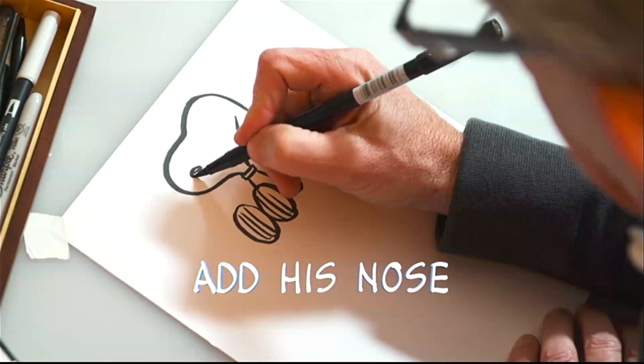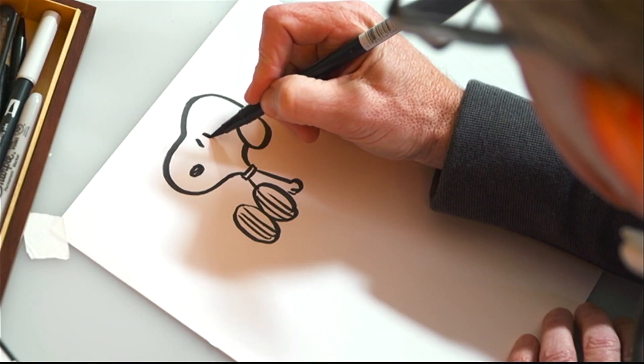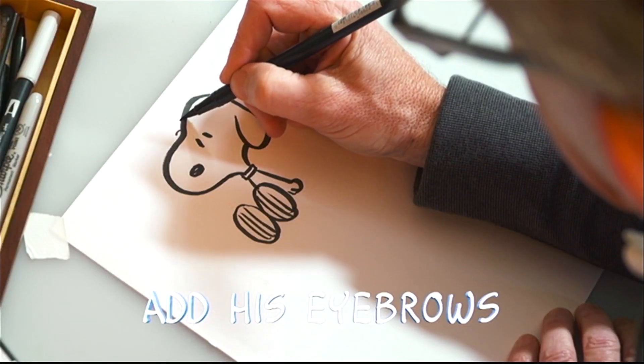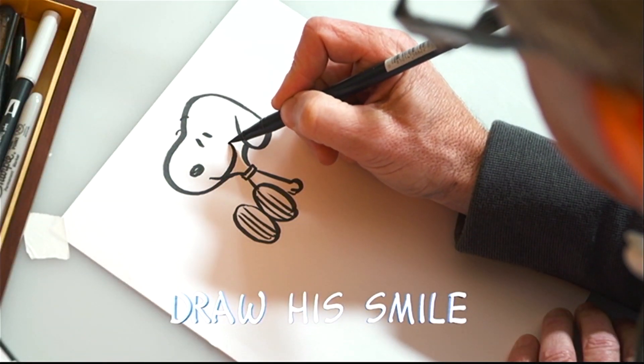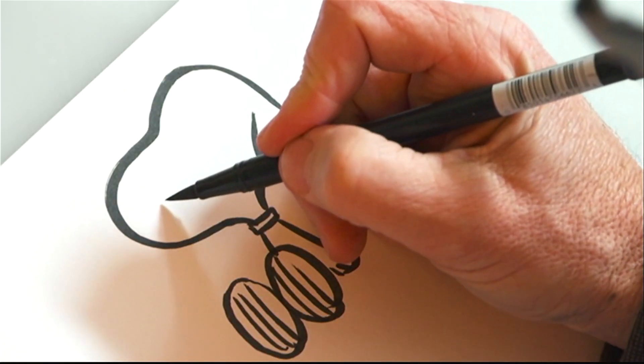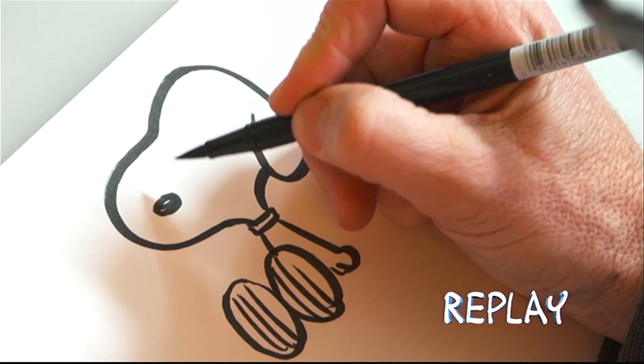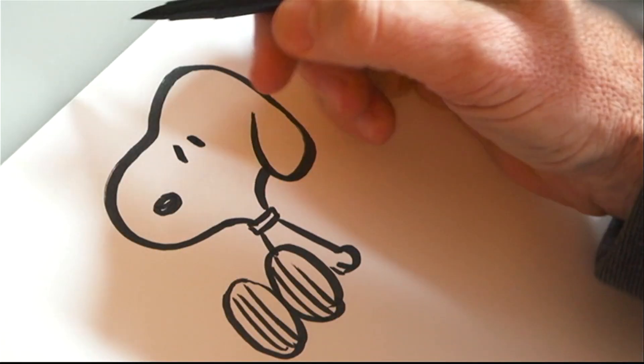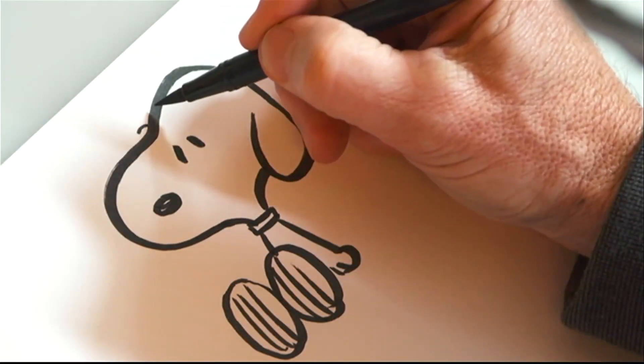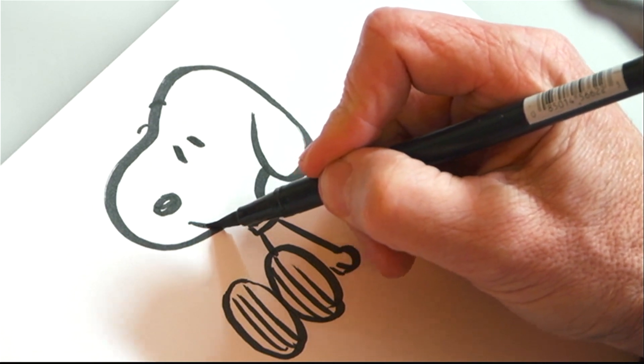Now we add his nose, his two eyes, some eyebrows for expression, and, of course, a great big smile. Watch this replay to learn where to put Snoopy's nose, eyes, and eyebrows. And don't forget about that big smile, that's important.